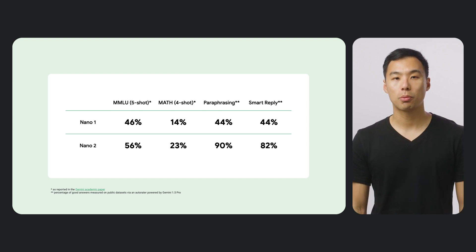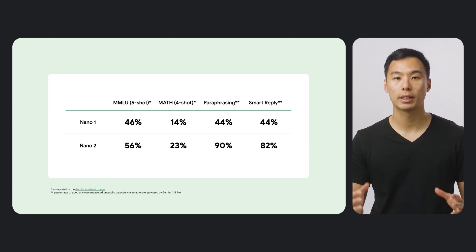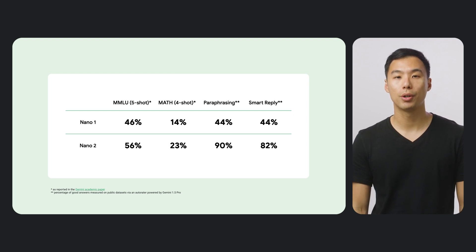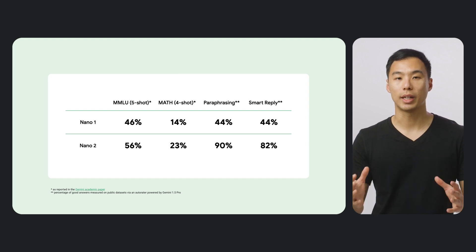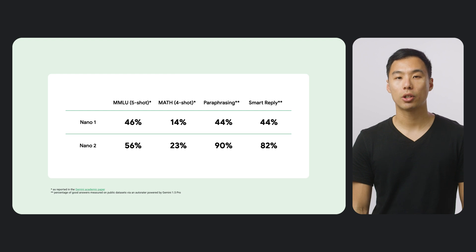Both the MMLU of the model and its performance with real-world use cases is markedly better than the previous generation, Nano 1. The model's MMLU benchmark metric went up by 10%, and the math metric went up by 9%. We know how the model performs in the real world is just as important as on academic benchmarks. That's why we built an auto-rater powered by Gemini 1.5 Pro to evaluate real-world use cases. The paraphrasing metric increased from 44% to 90% for Nano 2 compared to Nano 1, and for Smart Reply, the metric went from 44% to 82%.